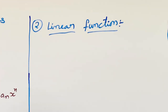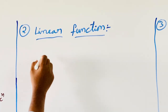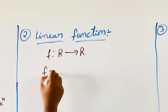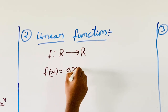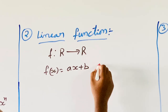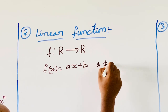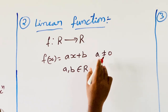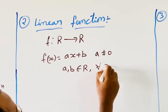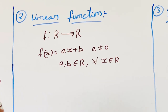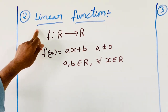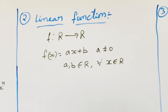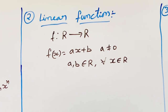Next one is a linear function. A function f mapping R to R, f of x is equal to ax plus b, where a is not equal to 0, and a, b belong to R, for all x belonging to R, is called the linear function. A linear function is also one particular type of polynomial function of degree 1.